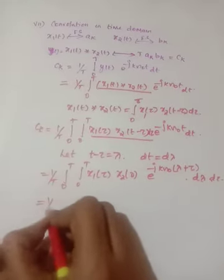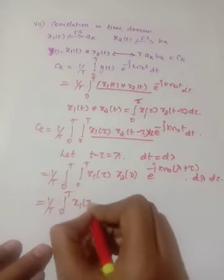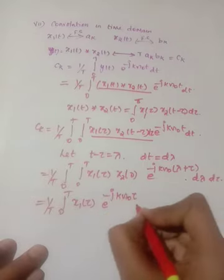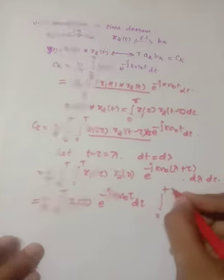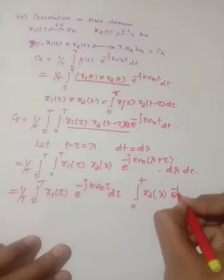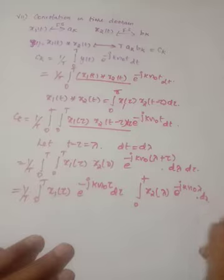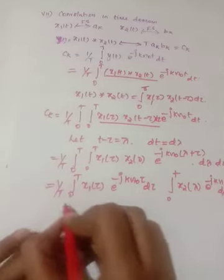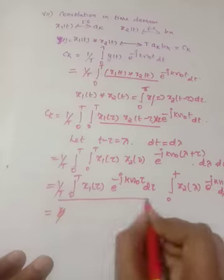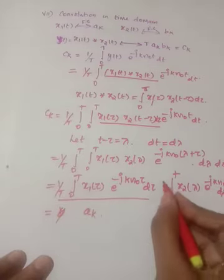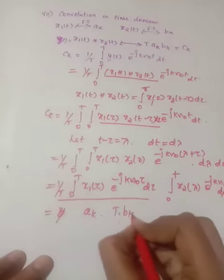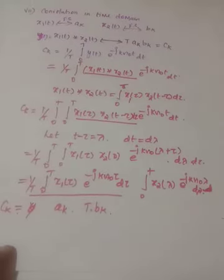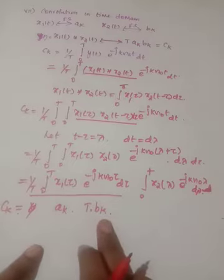Expanding: (1/T) integral of x1(τ) e^(−jkω₀τ) dτ times integral of x2(λ) e^(−jkω₀λ) dλ. The first part (1/T) integral of x1(τ) e^(−jkω₀τ) dτ is ak. The second integral without the 1/T factor gives T·bk. Therefore ck = T · ak · bk. Thus, convolution in the time domain results in multiplication in the frequency domain.